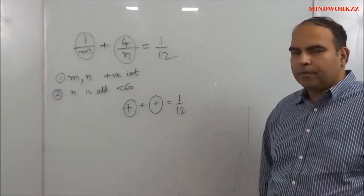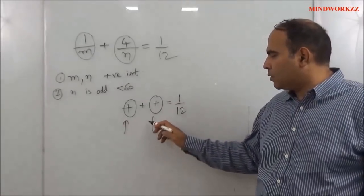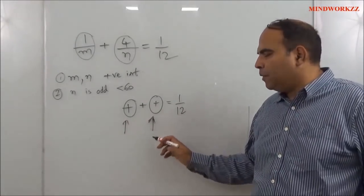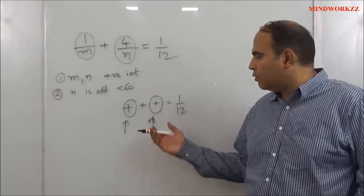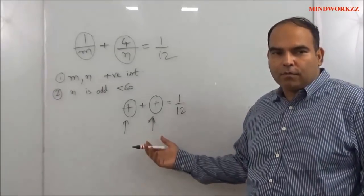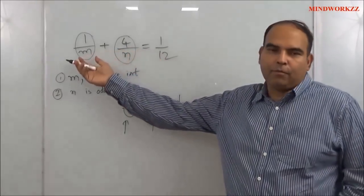to 1/12, naturally both these individual values would have to be less than 1/12. Both these individual values would have to be less than 1/12, and hence you then realize that we have one band where m should be more than 12, and we have another band where n must be more than 48.